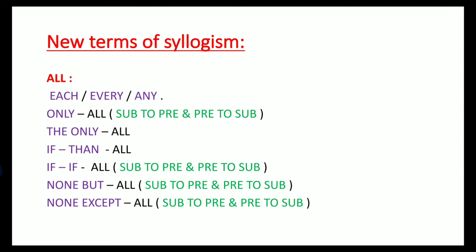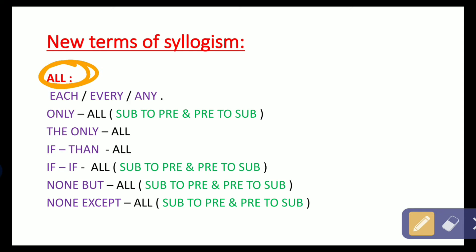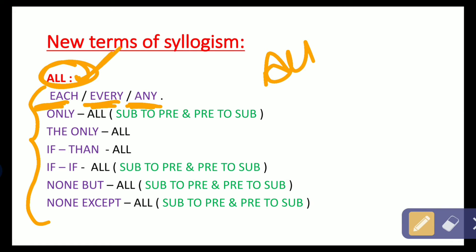First, let's see the new terms of syllogism. We all know the term 'all'. Instead of 'all', other terms can be used. If your statement or conclusion begins with 'each', 'every', or 'any', it represents 'all'.